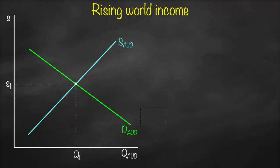Let's talk about the rising of world income, or your neighboring country's income. If your neighboring country starts to have a higher GDP, higher income — we denote this as higher Y-star, where star refers to our foreign or neighboring country. So if they start to get higher income, what will happen? Let's assume China: if China starts to have higher income, Chinese consumers need to consume more — higher C-star — which means the neighboring country needs to import more from Australia.